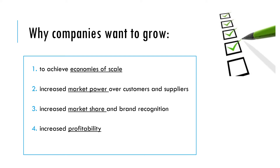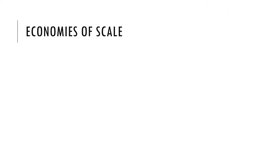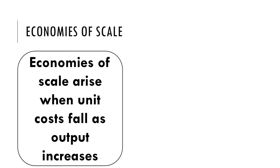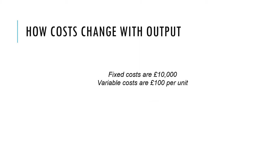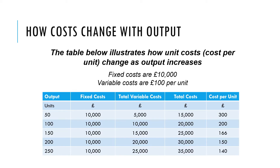Let's start off with economies of scale. Economies of scale arise when unit costs fall as output increases, so as we increase the scale of production the average cost of producing each unit gets cheaper. In this scenario we're going to assume fixed costs are £10,000 and variable costs are £100 per unit. Looking at this table, as output increases fixed costs remain the same, variable costs increase, and total costs increase.